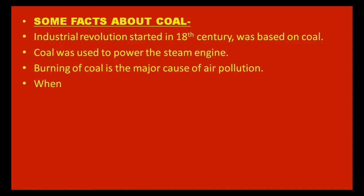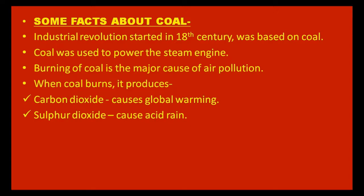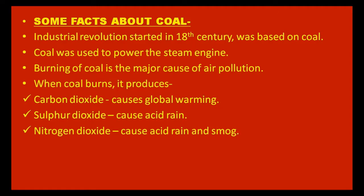When coal burns, it produces carbon dioxide which causes global warming, sulphur dioxide which causes acid rain, nitrogen dioxide which also causes acid rain, and a lot of smoke. Acid rain is rainwater containing acids, formed when these pollutants dissolve in atmospheric water.